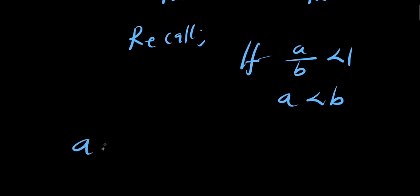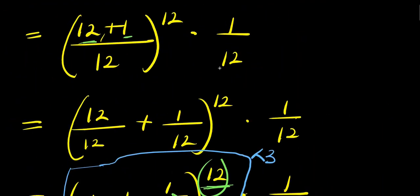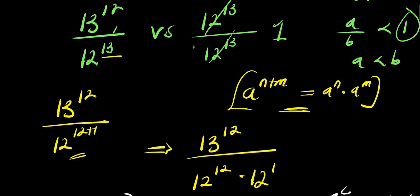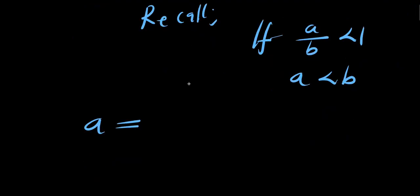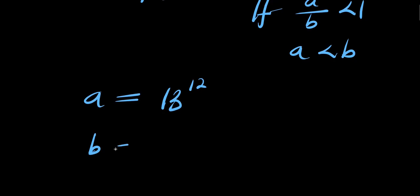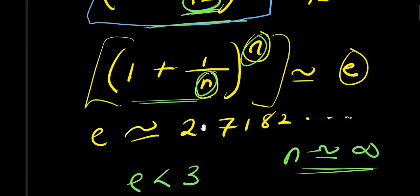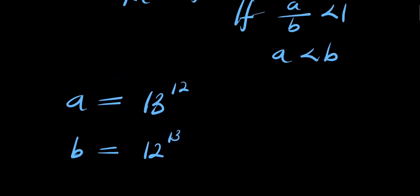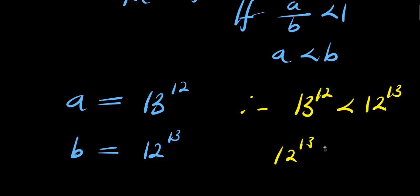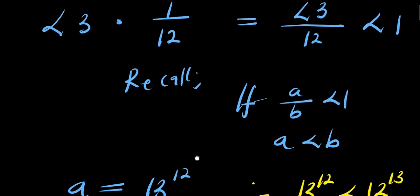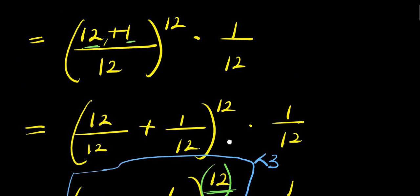Now what is our a? Remember a equals 13 to the power of 12, and b equals 12 to the power of 13. So since the conditions are true and a divided by b is less than 1, that means our a is less than b. Therefore, 13 power 12 is less than 12 power 13, meaning 12 power 13 is greater than 13 power 12. We obtained this result without a calculator by using Euler's identity.